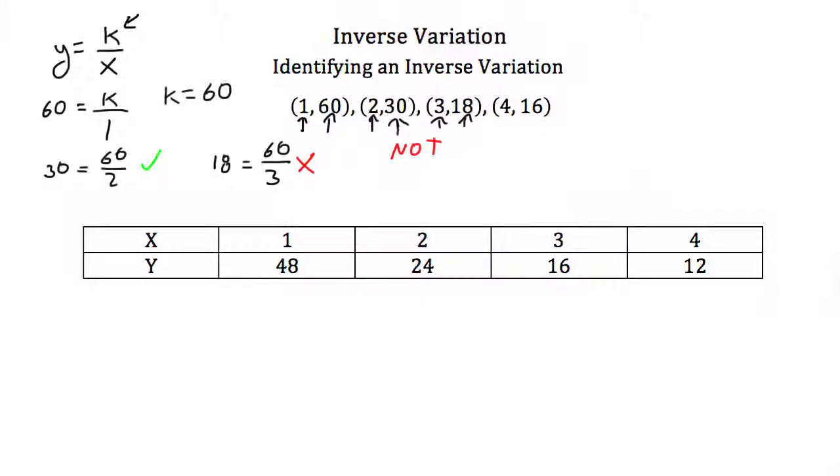Let's look at another example in this table. We have x and y values where x equals 1 and y equals 48. Plugging these in, we get k equals 48.